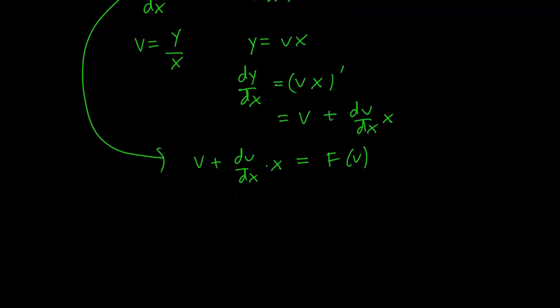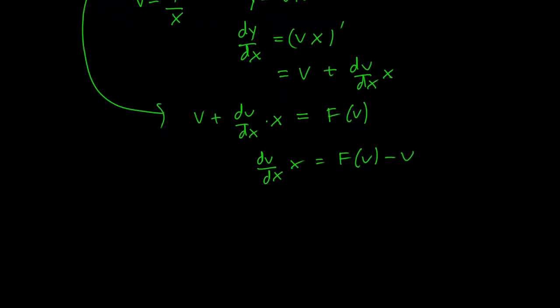Or in other words, dv/dx times x equals F(v) minus v. And hopefully this is a simpler equation to solve than the previous one.